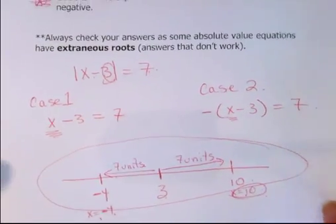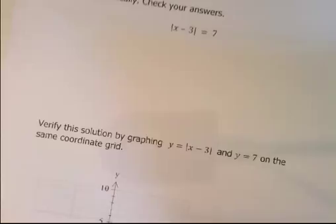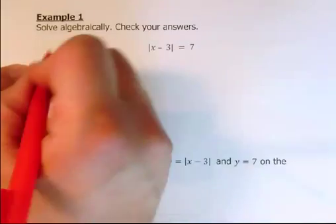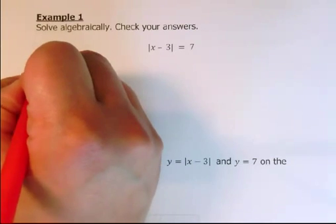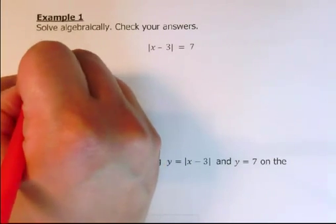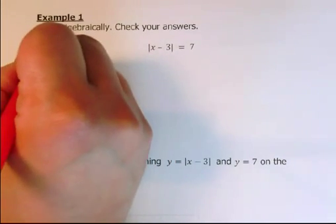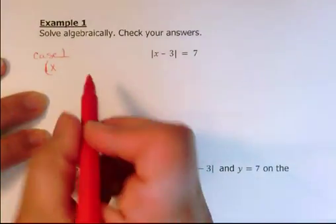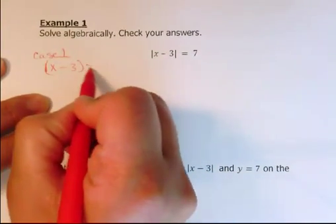So let's go and do this algebraically. Algebraically, we almost did it in the last page. So we've got our original - we're going to have case 1, which is the original. So you've got x minus 3 equals 7.